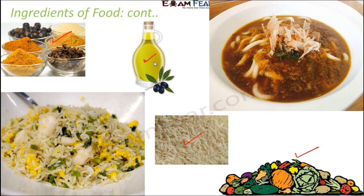Now you might ask: then why do we cook them? Why don't we eat them raw? Why don't we simply drink a glass of oil or chew a raw carrot? We do this just to improve the taste, because we have taste buds and we want the food to be tasty. For that purpose, we boil them, we fry them, and we add spices to make it more tasty. That is the entire purpose of cooking. So here we have reached the level of ingredients.